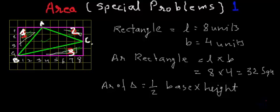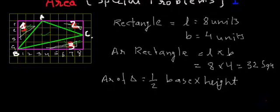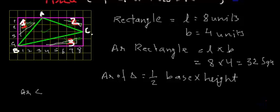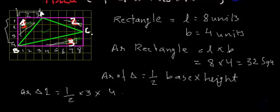All of us know the formula for the area of a triangle is 1/2 × base × height. So if we consider triangle 1, the area of triangle 1 will be 1/2 × base. The base of triangle 1 is 1, 2, 3 — so 3, multiplied by the height of the triangle which is 4. So the area of triangle 1 is 1/2 × 3 × 4, which gives 6 square units.